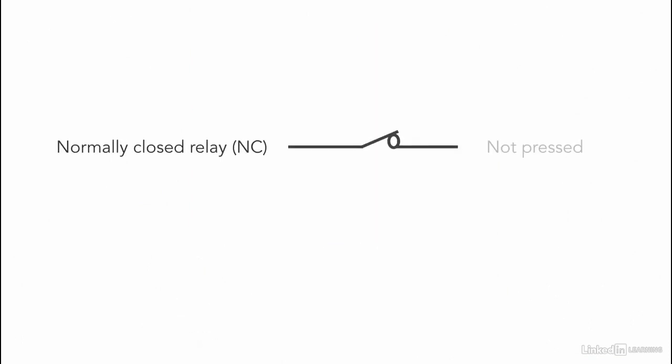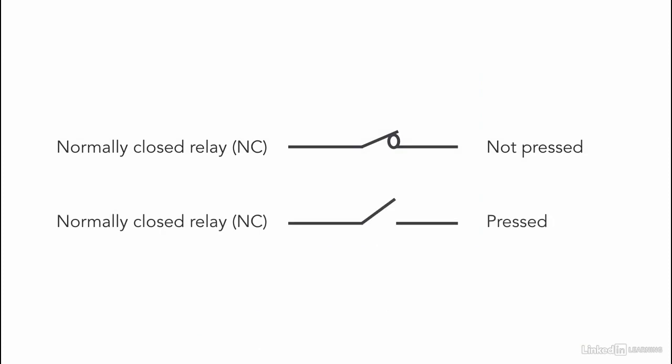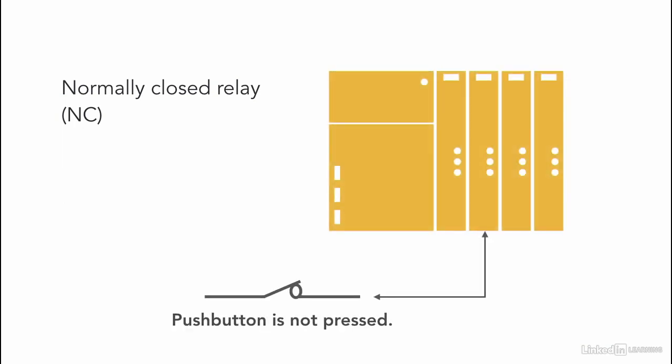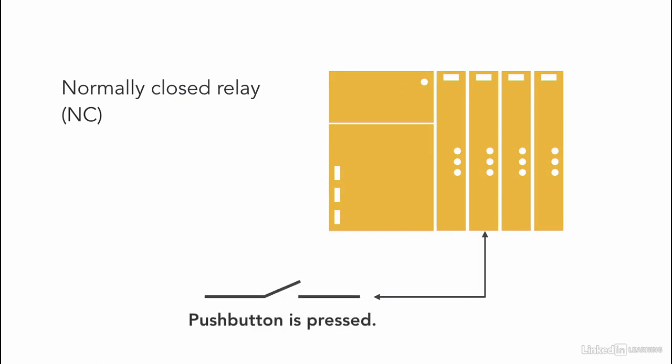For a normally closed contact push button, if the push button is not pressed, the memory location connected to that push button within the module is showing 1. As soon as the push button is pressed, the continuity changes, and then the memory address changes its state to 0 — there is no physical continuity.